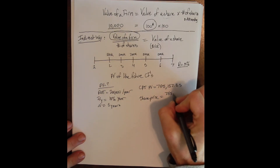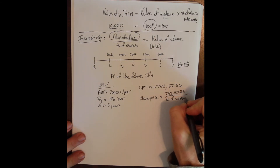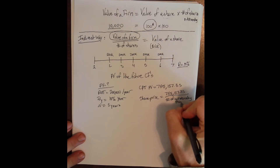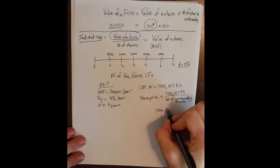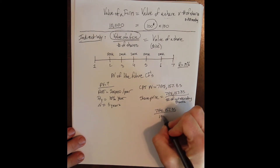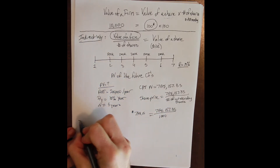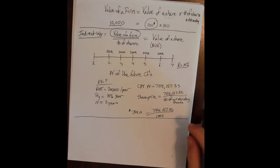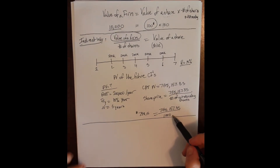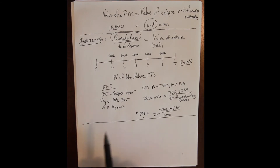The share price is then $758,157.35 divided by the number of shares outstanding. If we assume 1,000 shares outstanding, that gives $758.15 per share. So first we value the firm, then by knowing the firm's value and the number of shares, we know the value of the stock. However, there are a number of problems with this approach.